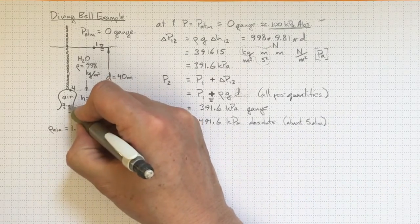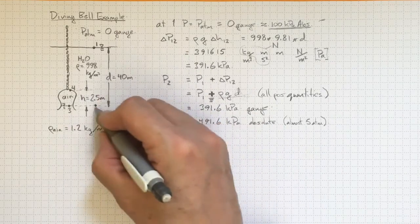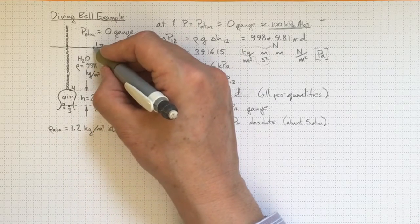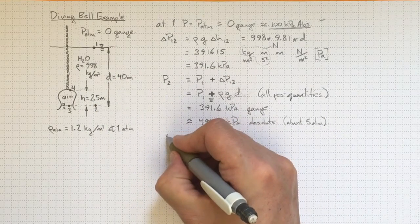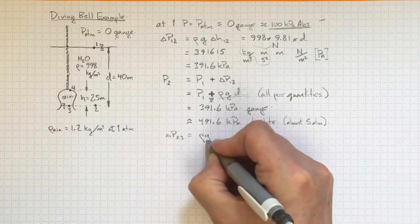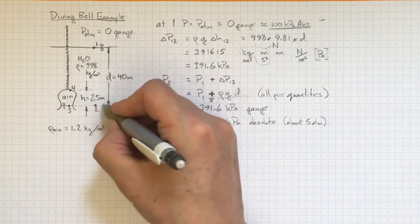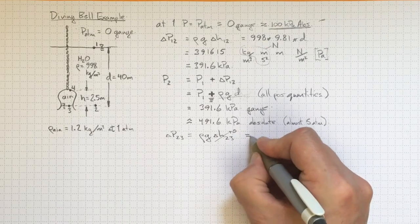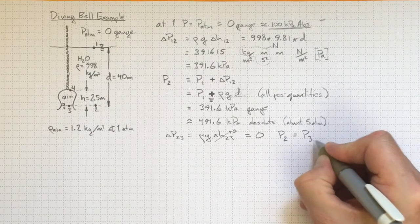Now if I want to know the pressure at 3, well it's connected to location 2 by the continuous path through the water, just like from location 1 to location 2 we had a continuous path through the water. So once again I can write delta p from 2 to 3 equal to rho times g times delta h from 2 to 3. But these are at the same elevation locations 2 and 3, so that's zero. So no pressure change between location 2 and location 3. p2 is equal to p3.